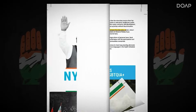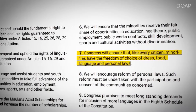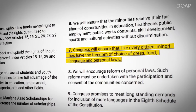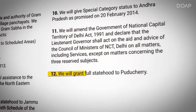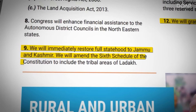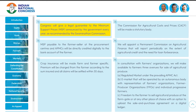Now let's see what Congress has to say on these policies. Congress says they will provide all citizens the right to freedom of choice — of dress, food, language, and personal laws. They will also guarantee Jammu and Kashmir and Pondicherry full statehood, and promise Ladakh the Sixth Schedule. For farmers, there are two guarantees from Congress: first, a guaranteed MSP, and second, the full right to resell their stock in whichever market they want.